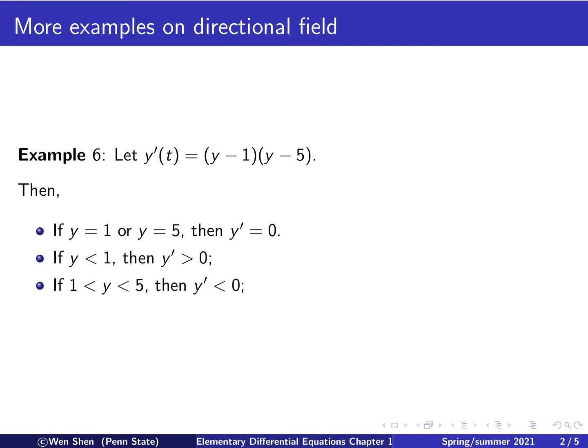Now, if y shall lie between 1 and 5, bigger than 1, this term is positive, less than 5, this term is negative, and then we have y prime is negative. And now, finally, if y is bigger than 5, then this is positive, and this is positive, and y prime will be positive.